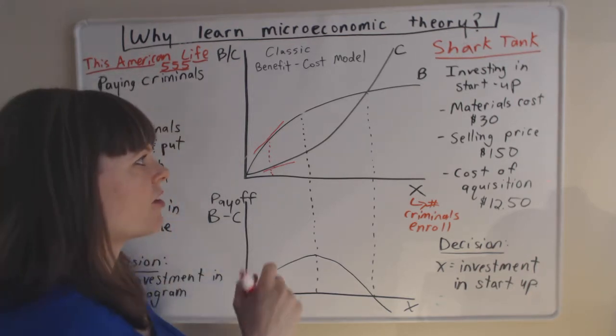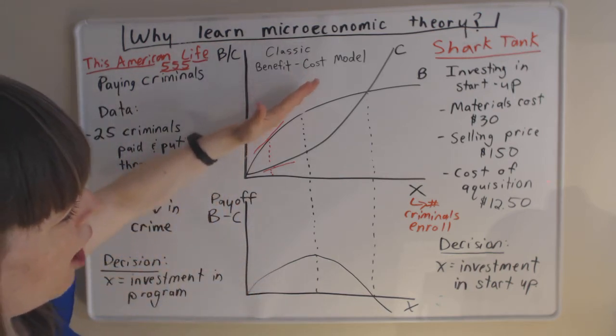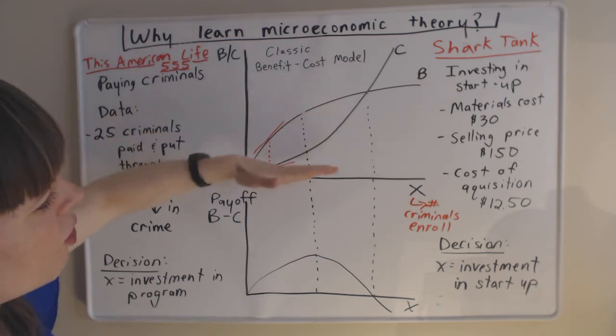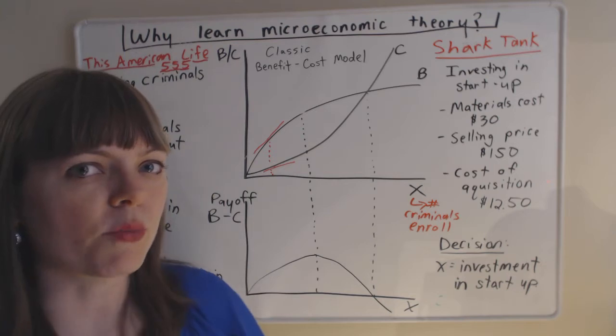So to think about that, we need to figure out which one is going to happen faster. Is there going to be a faster drop in the marginal benefit or a faster increase in the marginal cost? And of course there's arguments both ways.